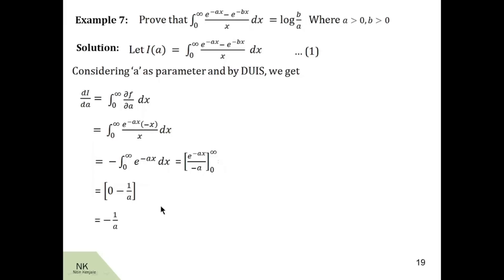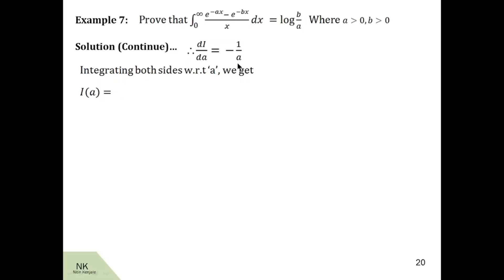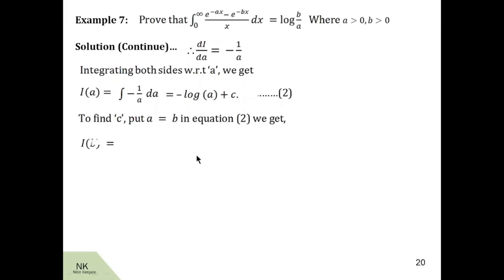Now we integrate both sides of this equation to get the value of i. After integration, on the LHS we get i of a, whereas on the RHS we get minus the integral of 1 by a da, which is minus log of a, plus integration constant c. To find the value of this constant c, we will substitute a equal to b in this equation. After substituting a equal to b, we get i of b equal to minus log b plus c.